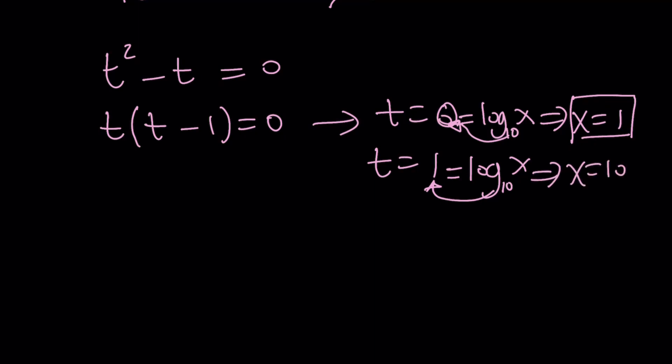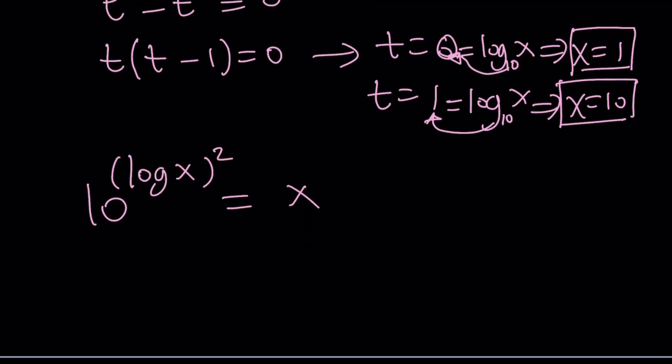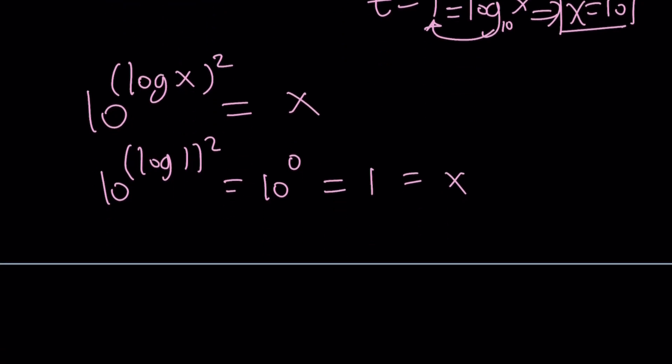So, we got two solutions. x equals 1, and x equals 10. And guess what? Both solutions are valid. And if you don't believe that, you can check it out. If x is 1, 10 to the power of log 1 squared, log 1 is 0, 10 to the power of 0 squared is 10 to the power of 0. That's equal to 1, but that's equal to x, because x is equal to 1. And then now replace x with 10. 10 to the power of log 10 squared is log 10 is 1. 1 squared is 1, so 10 to the power of 1 is equal to 10, but that's equal to x. So, both solutions check, which means they are valid.